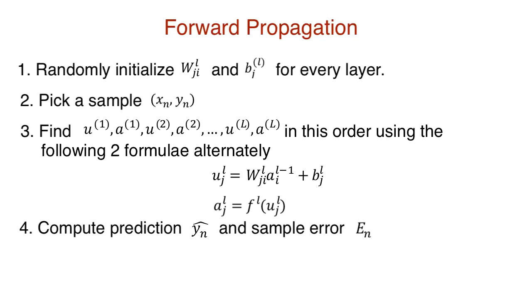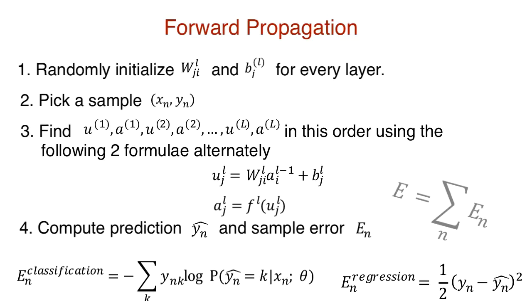We start with the random initialization for the weights and biases, and then compute U and A for every neuron using these two formulas alternatively. Hence the values propagate forward in the network. This is used to compute the prediction y-hat. Y-hat along with the actual label t is used to compute the total cost for this sample n, represented as E_n. We consider the total cost E as a sum of the costs incurred by each sample E_n. This is a reasonable assumption.